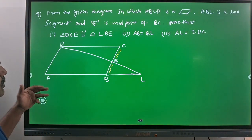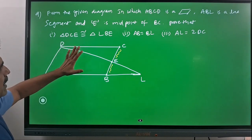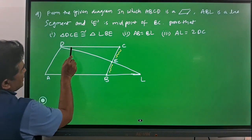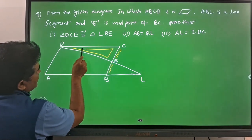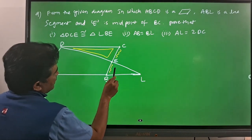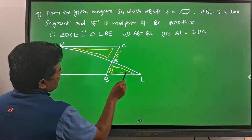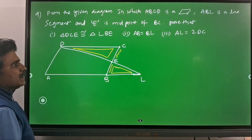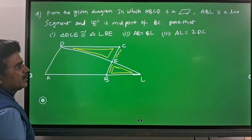Let us prove triangle DCE congruent to triangle LBE. What is DCE? This is DCE. And what is LBE? This is LBE. Let us prove these two are congruent.